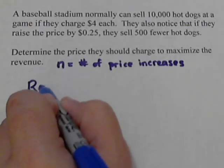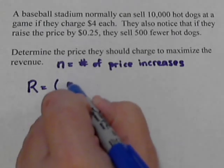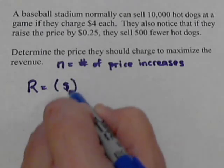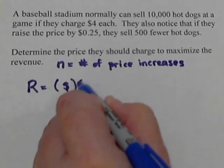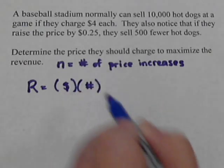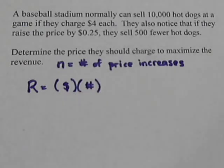So, we know how to find the revenue. To find the revenue, you need to take the cost, how much you're charging for each, and multiply it by the number of items that you sell. And that'll give us our revenue.